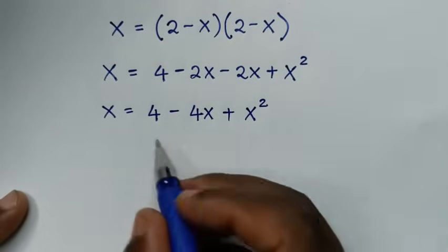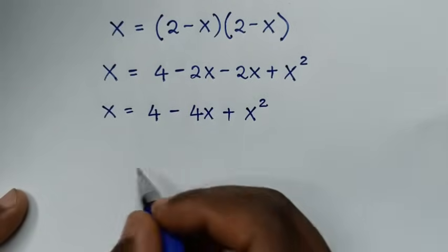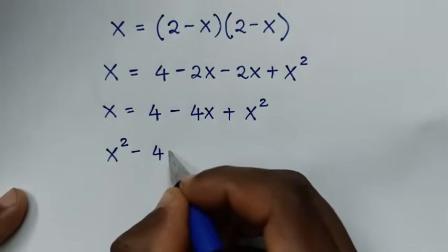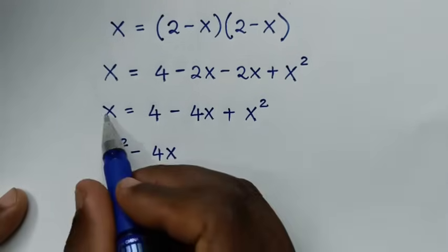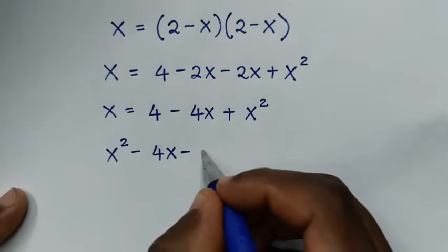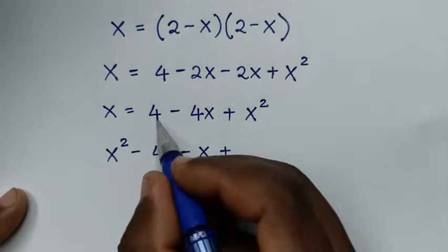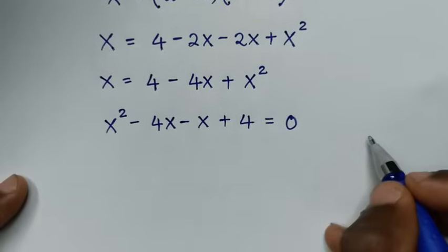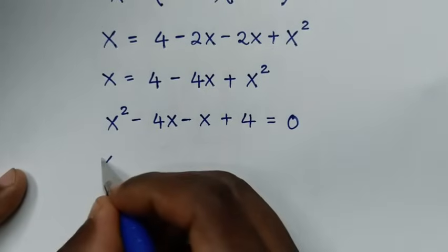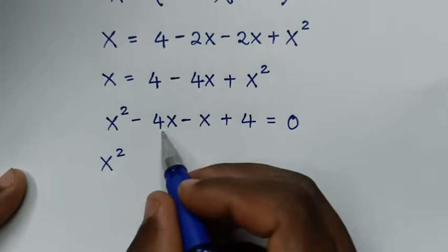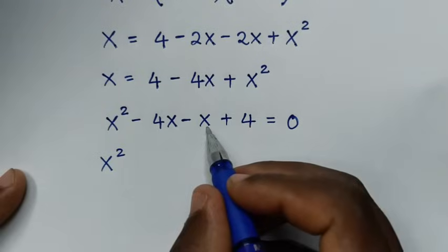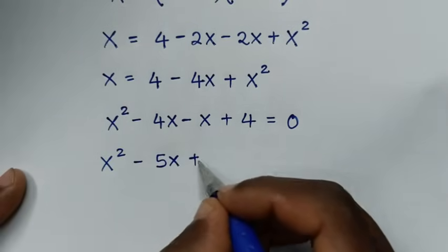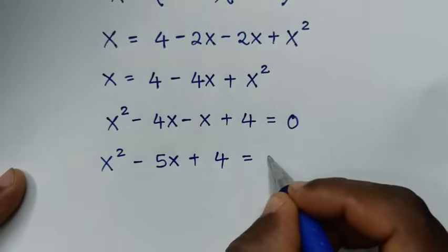Then we'll rearrange, starting from the x squared side: x squared minus 4x, then we take this x to this side so it becomes minus x, then plus 4 is equal to 0. Combining like terms: x squared minus 5x plus 4 is equal to 0.